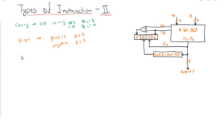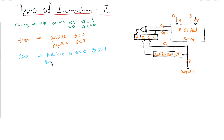The next flag is the zero flag. There is a mechanism that checks whether all bits of the accumulator are zero. After performing any operation — whether logic, arithmetic, or shift — if all bits of the result are 0, then the Z flag is set to 1.